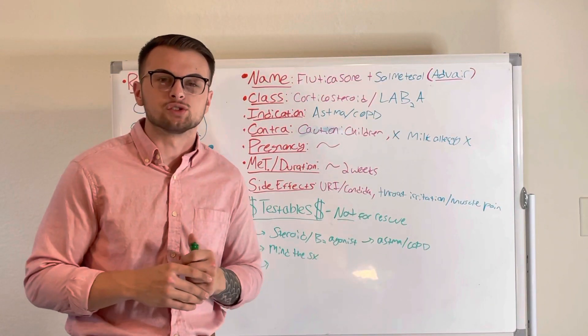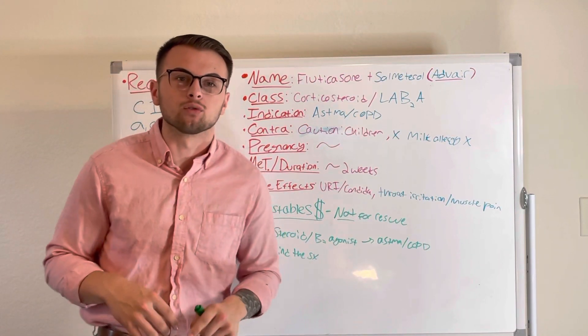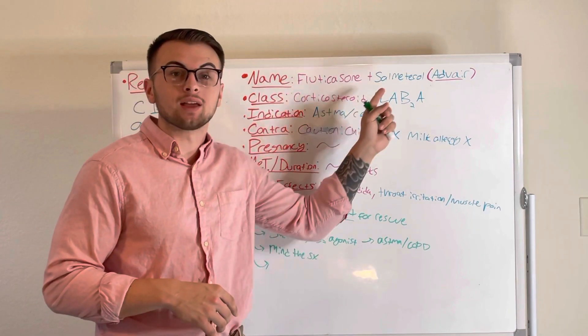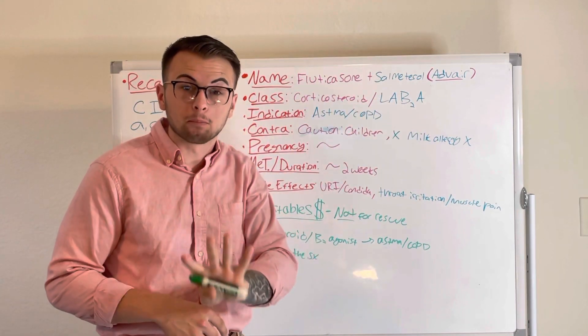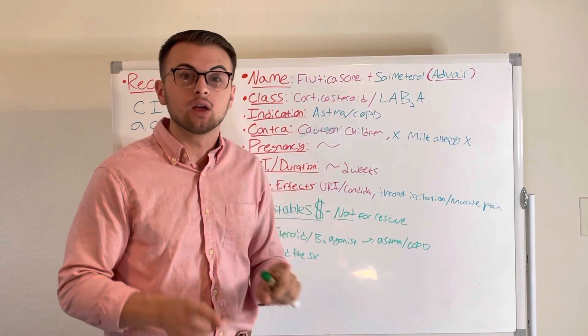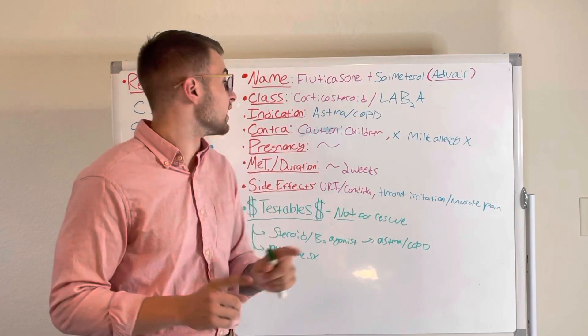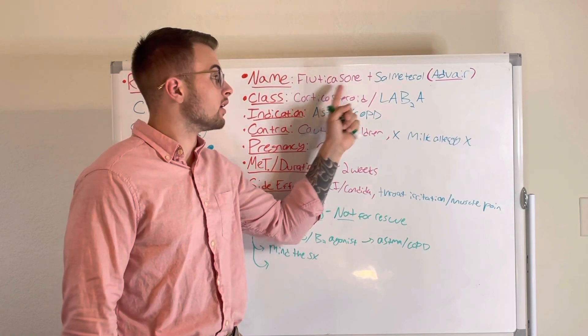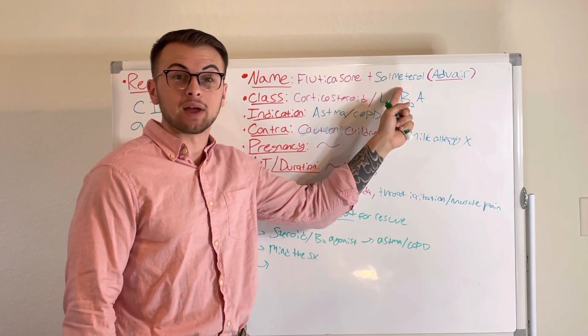Hello everyone and welcome back to Clinical Cousins YouTube channel. Today we're going to go over the drug fluticasone and salmeterol, which combined is known as Advair or Advair Discus. This drug is classified as a corticosteroid long-acting beta-2 agonist.